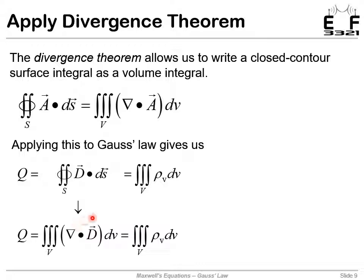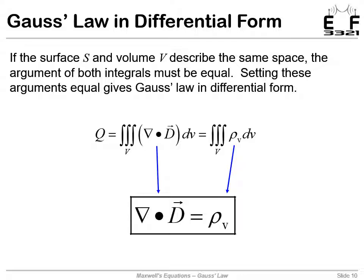Now we'll see we have two volume integrals that are set equal. If we have two volume integrals and they're equal, that means what's inside of those integrals has to be equal. So that means the divergence of D is equal to the charge density. That is Gauss's law in differential form.